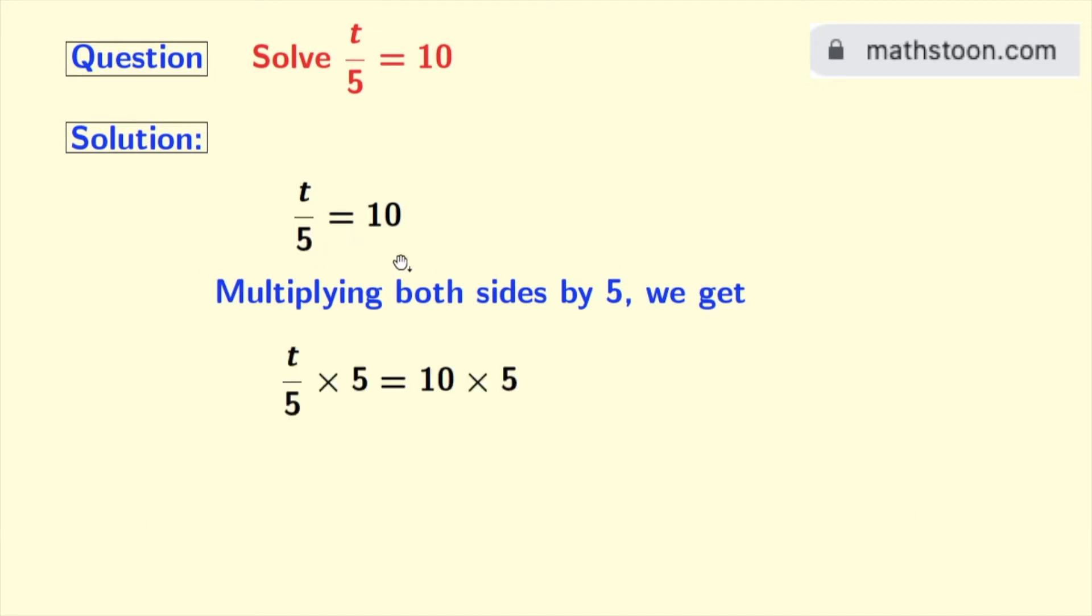Doing so, we get t by 5 times 5 is equal to 10 times 5. Look that in the left hand side, 5 gets cancelled and we have t.